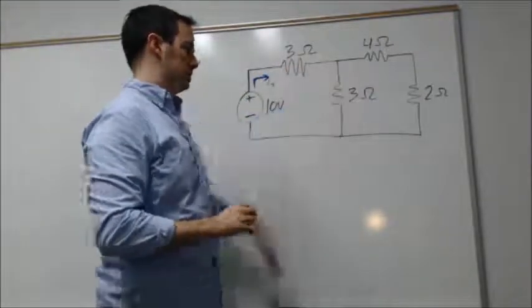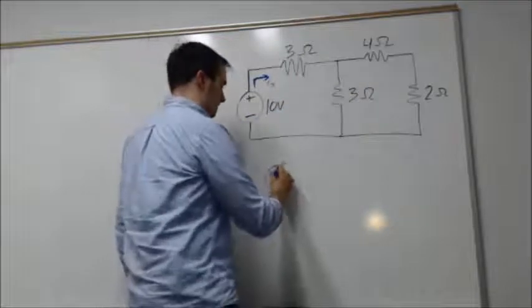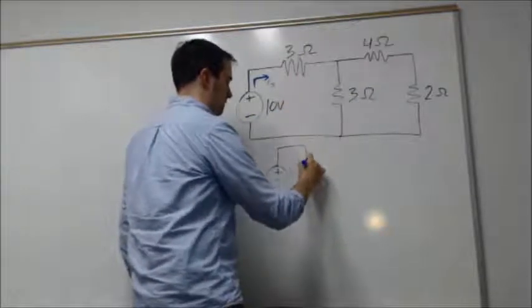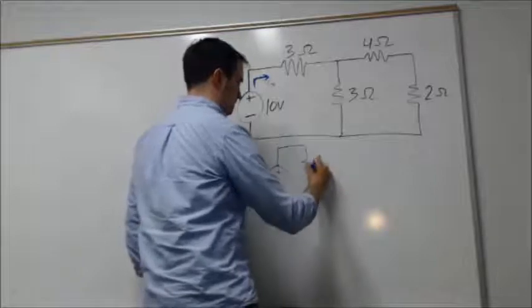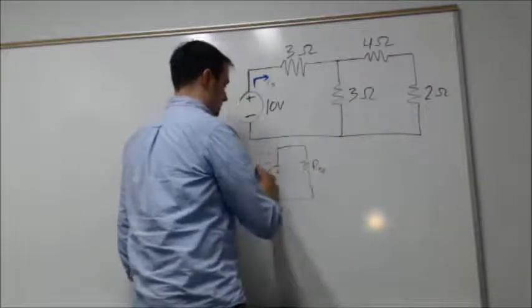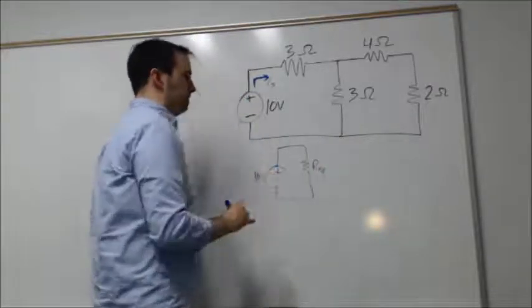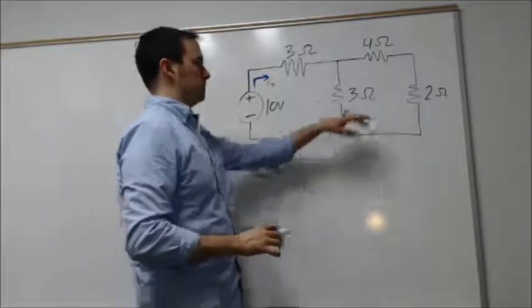So our 10 volt supply with R_eq. In order to do that, we'll see, first we start on this end with two resistors in series, the 4 ohm and 2 ohm resistors.